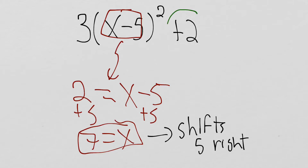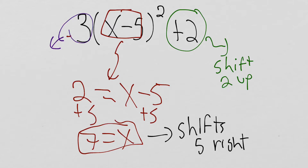The plus 2 on the outside is going to add to our outputs, making them bigger by 2, so this is a vertical shift of 2 up. And then the 3 out front means we're going to multiply all of our outputs by 3, which makes our overall graph 3 times steeper.